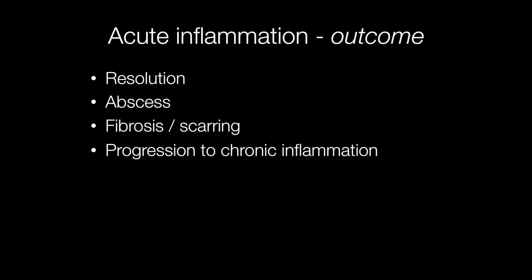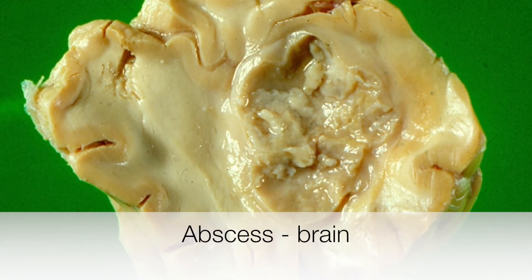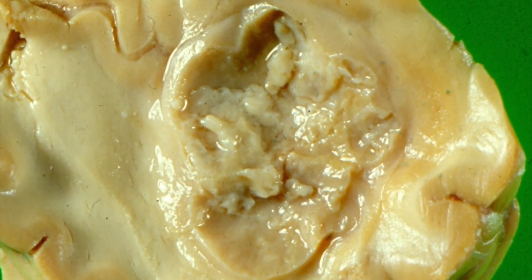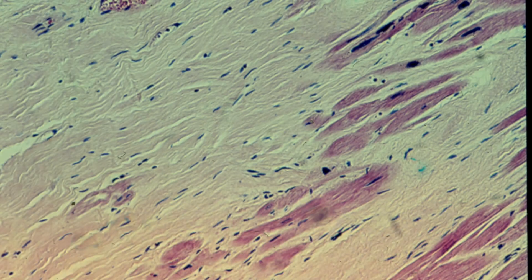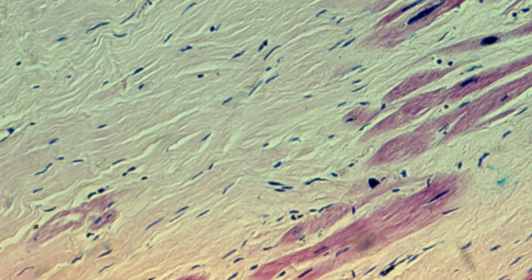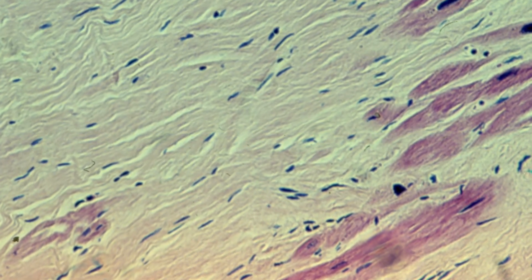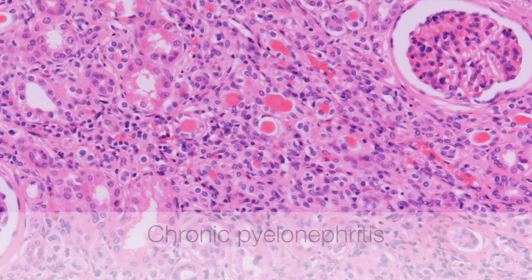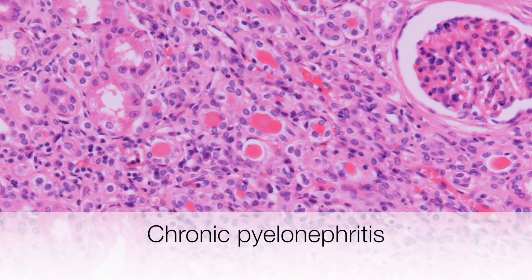Following acute inflammation there may be a number of outcomes. The most frequent is resolution, where the affected area returns to normal. More serious outcomes include abscess formation, fibrosis, scarring, or progression to chronic inflammation. This piece of brain shows an abscess that has formed. The acute myocardial infarct resulted in replacement of dead muscle fibres by fibrous tissue or scarring. Acute pyelonephritis may progress to chronic pyelonephritis.